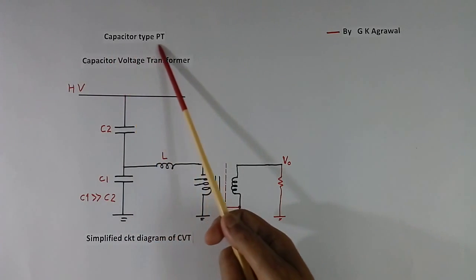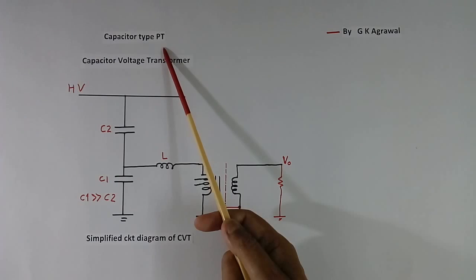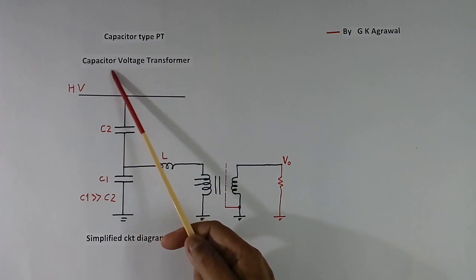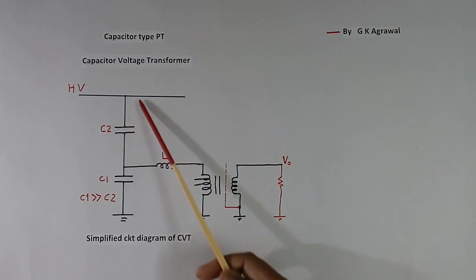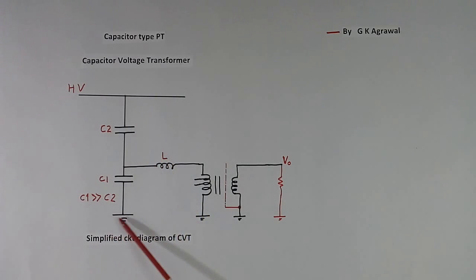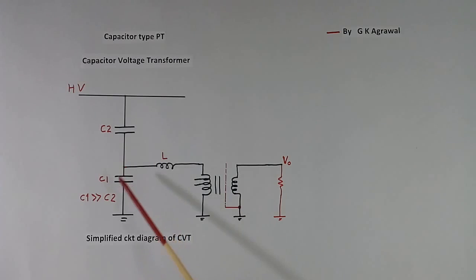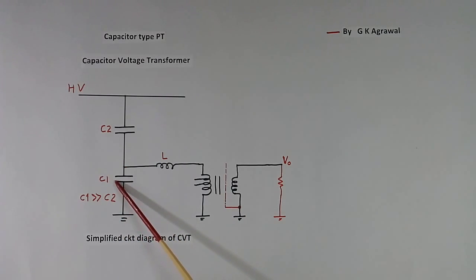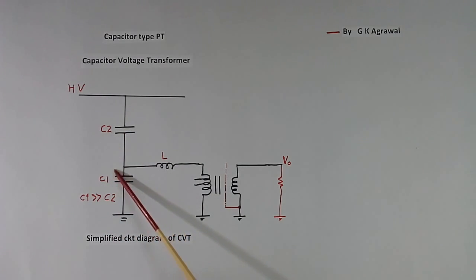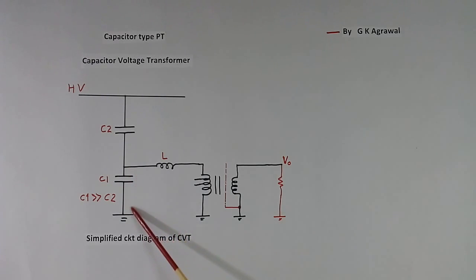This is the capacitor type PT, also called a capacitor voltage transformer (CVT). It has no high voltage winding. There are two capacitors used as a voltage divider. This type is used because the cost of this capacitor divider is lower compared to a winding-type transformer. This point is grounded. The value of C1 will be more than C2, so the impedance of C1 will be less and less voltage will appear across it.